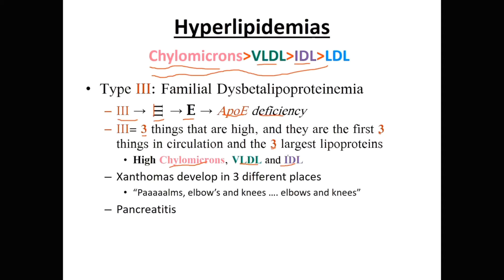In type 3, xanthomas appear in three specific locations — think of the song 'head, shoulders, knees and toes,' but here it's palms, elbows, and knees. Three distinct places. The palms especially are a hallmark finding for type 3. Watch for elbows and knees too. Because VLDL and chylomicrons are involved, there are lots of triglycerides, which can lead to pancreatitis.